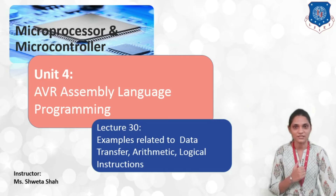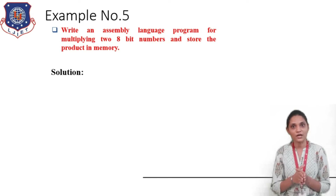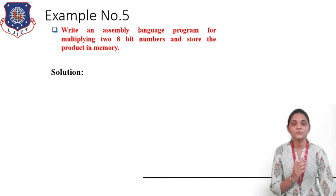So let us start with the example. In this example we have to write the Assembly Language Programme for multiplication of two 8-bit numbers and store this result to the memory.